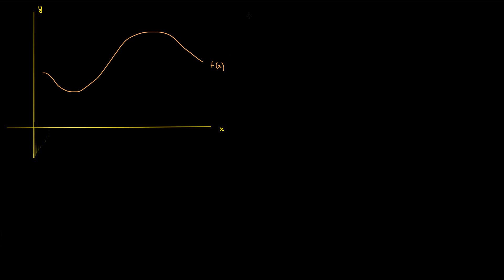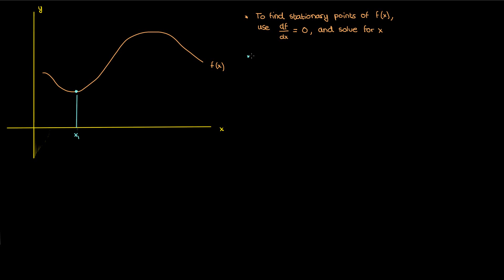Say I have a function that looks something like this. If I wanted to find the points where the function was stationary — in other words, points where the function was not changing — then I could take the derivative of the function and set that to zero. Once I set it to zero I can solve for the values of x where f is stationary. To find stationary points we set df/dx to zero and solve for x to get my solutions. Let's call one of those solutions x1.